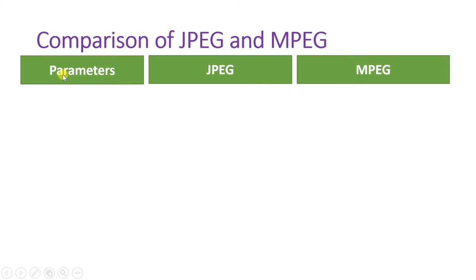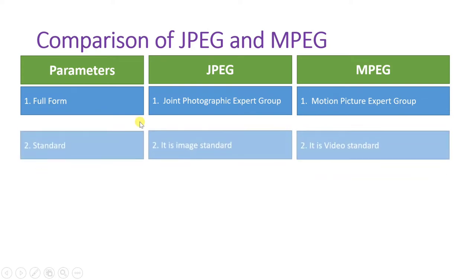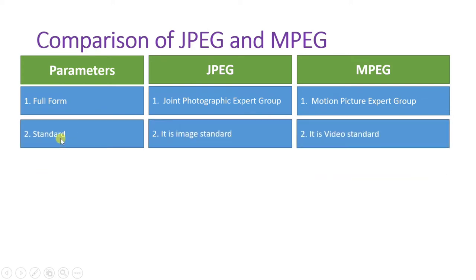Here I will explain the comparison based on different parameters. First, we will see the full form of MPEG and JPEG. JPEG stands for Joint Photographic Expert Group, and MPEG stands for Motion Picture Expert Group. The JPEG standard is applied to images, while the MPEG standard is applied to video.